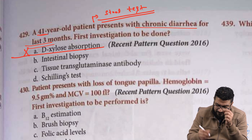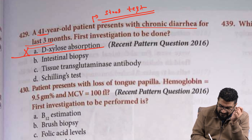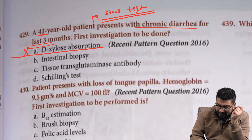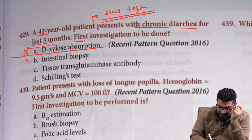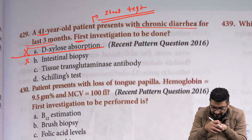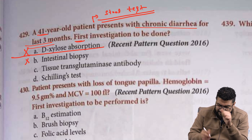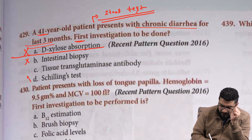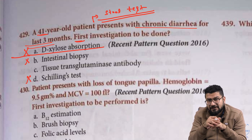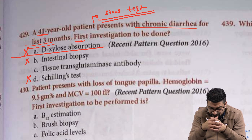Coming to biopsy — if the question asks what is the best test, then the answer could be biopsy. Coming to the Schilling test: the Schilling test we do for B12 deficiency.